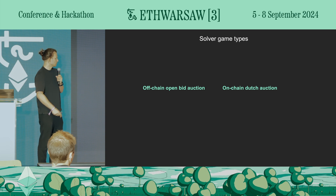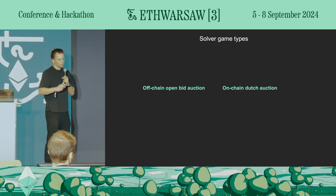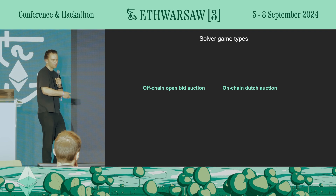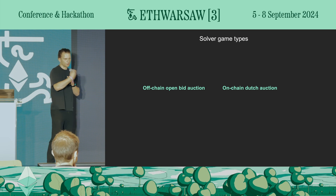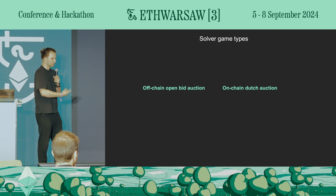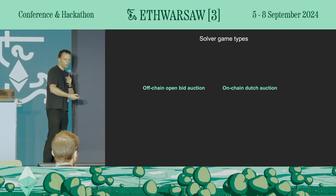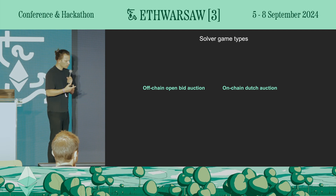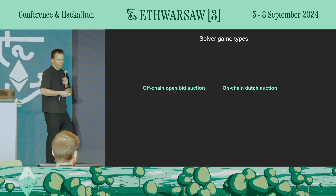Off-chain open bid auction means there is an intent and solvers, without using the chain, play bids saying how much more they can give to the user. The one who wins the bid gets the right to actually fill the intent. Why is this game played off-chain and not on-chain? Because on Ethereum everything on-chain is super expensive and we want it to be cheap. The solver which wins the game then executes a normal transaction on-chain, so there is basically zero game-related overhead.